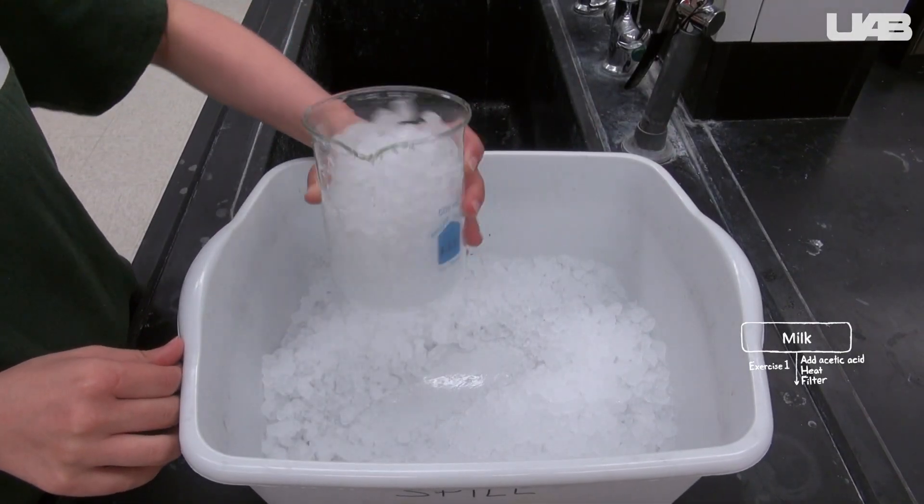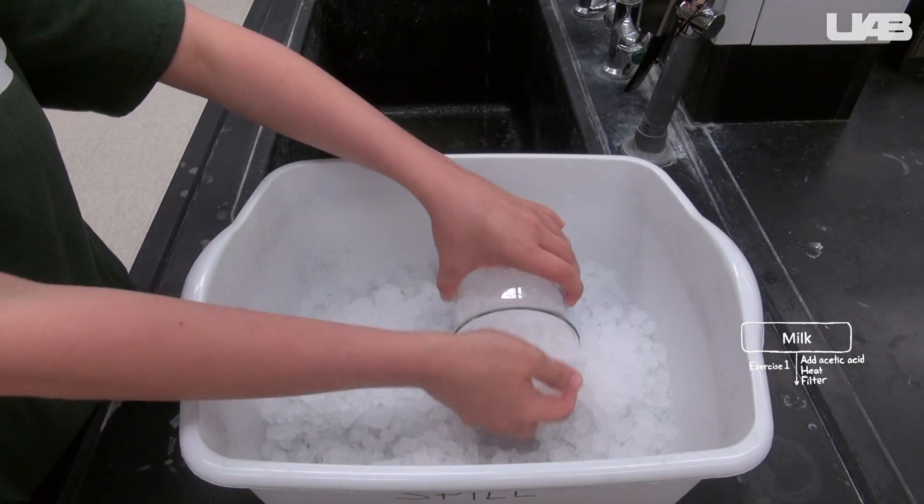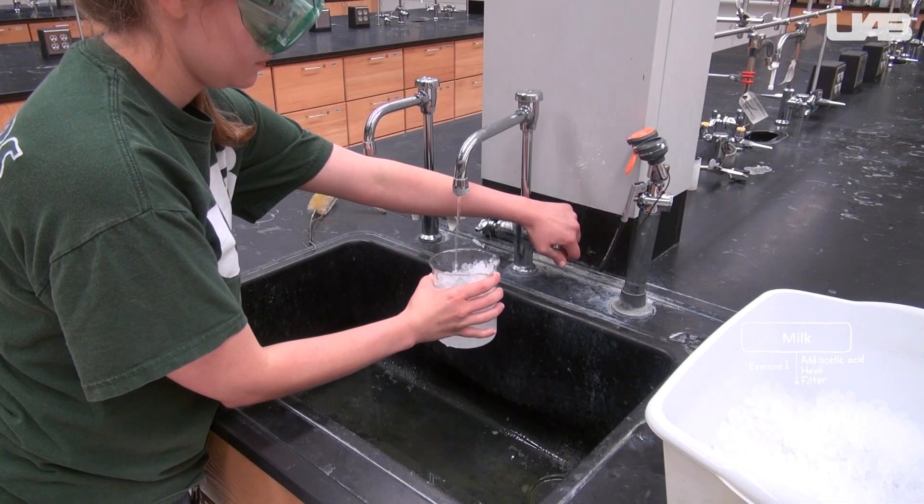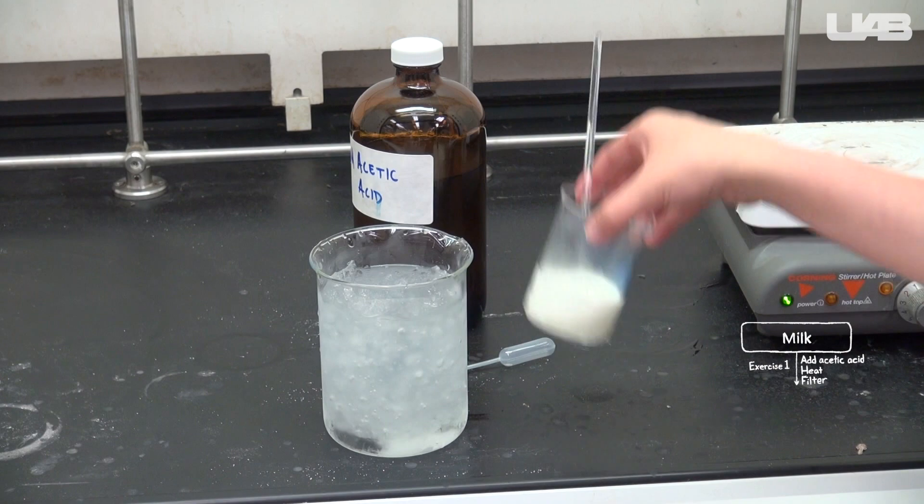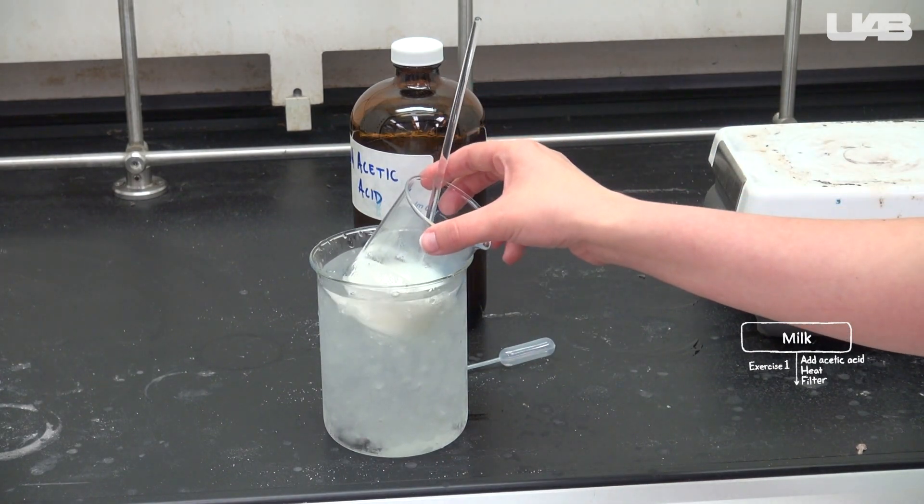Another member of the group should prepare an ice bath by packing a large beaker with ice and pouring some water into it. When the precipitate is formed, place the beaker into the ice bath.